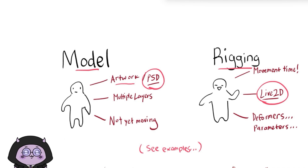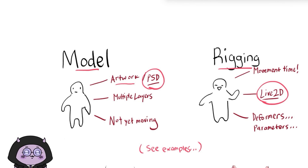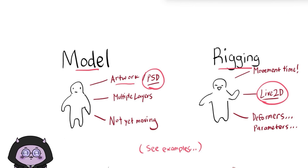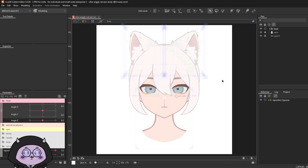You'll commonly hear two terms: model and rig. Model is what you call the artwork — so this would be the model. And rigging is the process of movement creation, which happens in Live2D.